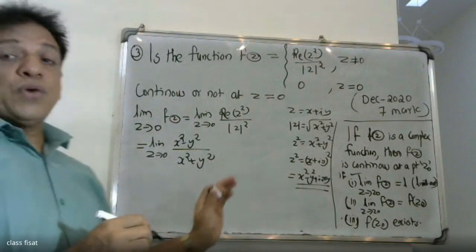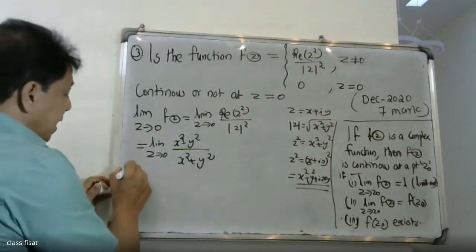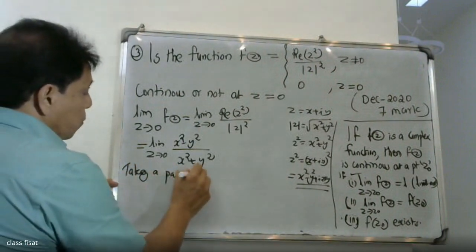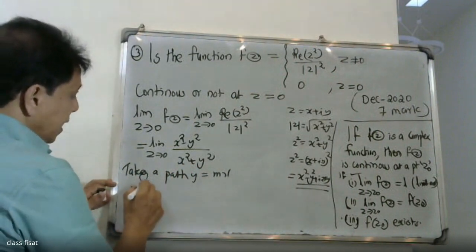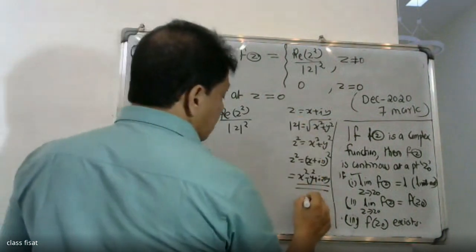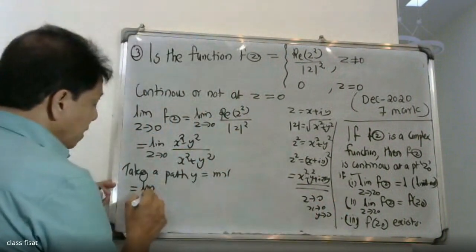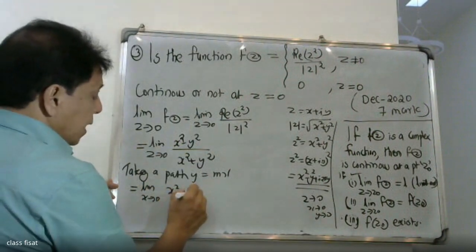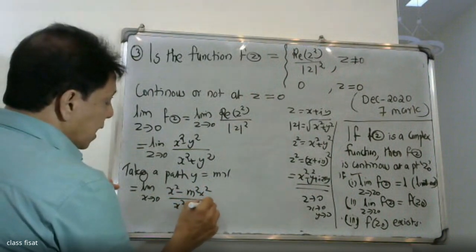We take the path y equals mx to evaluate the limit. As z tends to zero along the path y equals mx, both x and y tend to zero. So the limit becomes the limit as x tends to zero of x squared minus y squared over x squared plus y squared, substituting y equals mx gives x squared minus m squared x squared divided by x squared plus m squared x squared.